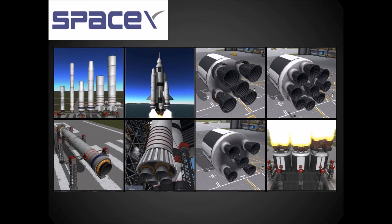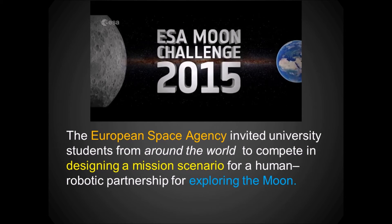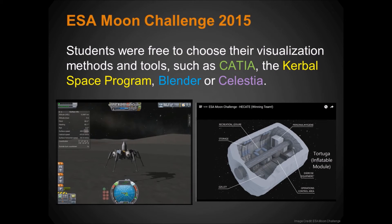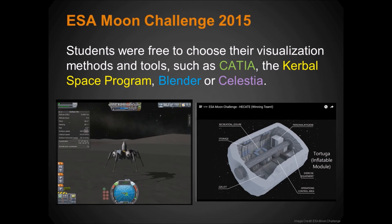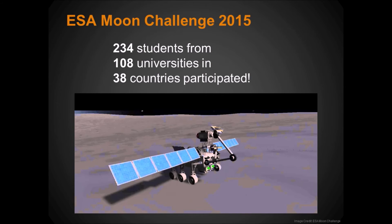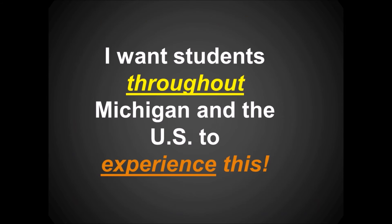The Space Y mod adds gigantic engines and gigantic fuel tanks to make huge rockets. In 2015, the European Space Agency challenged college students from around the world to come up with scenarios for low lunar orbit and lunar surface operations. They allowed them to use several different packages to model this, including CATIA, Kerbal Space Program, and Blender — and the winning team used Kerbal Space Program. Hundreds of students from around the world participated. I would like to see students from Michigan and throughout the U.S. experience this.